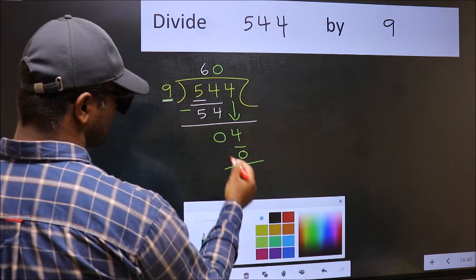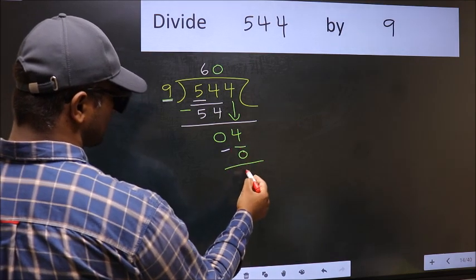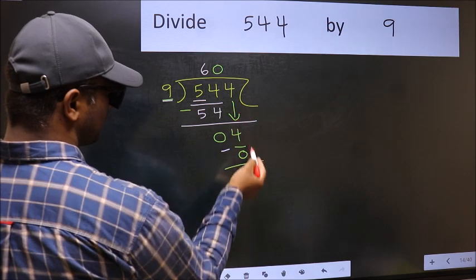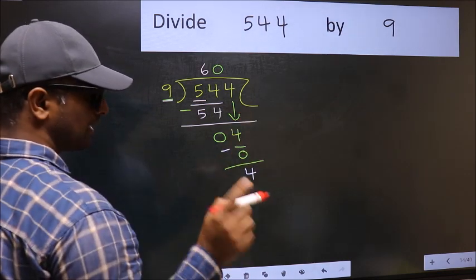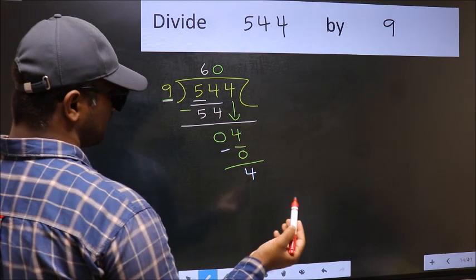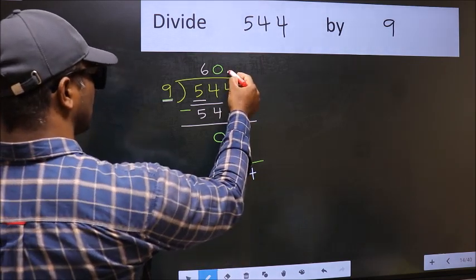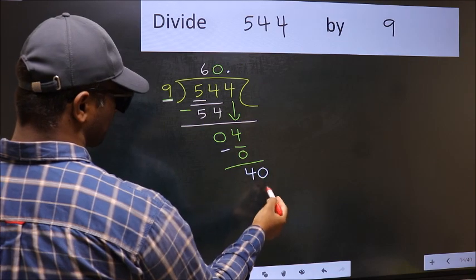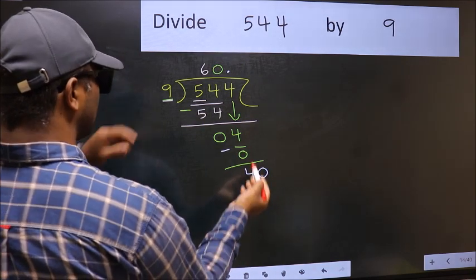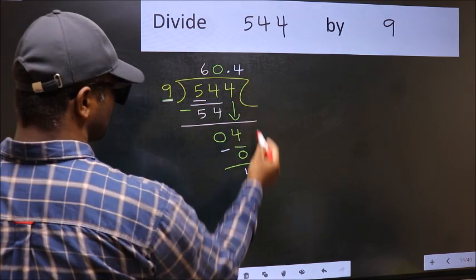Now we should subtract. 4 minus 0, 4. Over here, we did not bring any number down, and 4 is smaller than 9. So now you can put dot and take 0. So 40.